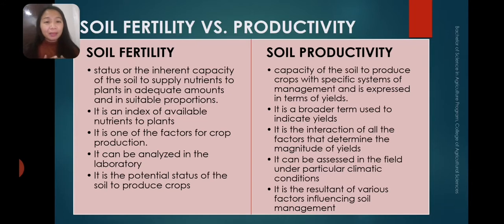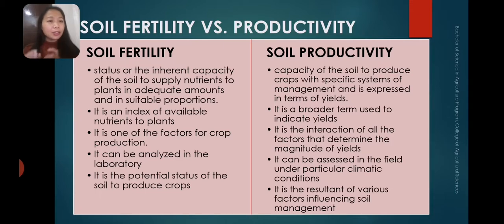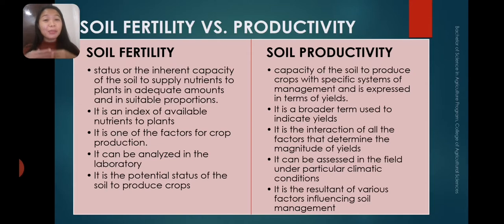When we say inherent capacity, it is already there — it is innate in the soil, it is indigenous, generated within the soil. So, its status or inherent capacity of the soil is to supply nutrients to plants in adequate amounts and in suitable proportions. The equivalent for soil productivity is the capacity of the soil to produce crops with specific systems of management, expressed in terms of yields. So soil fertility is about supplying nutrients, while soil productivity is about producing yields — that's why the two are very different from each other.